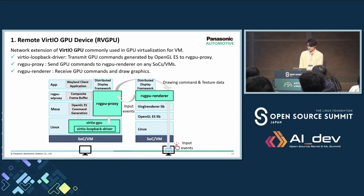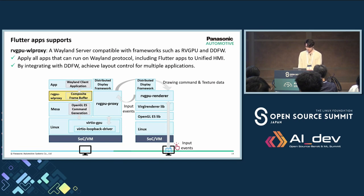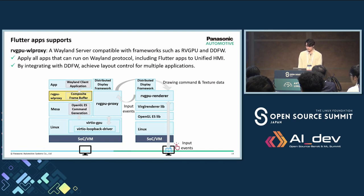RBGPU also creates virtual input devices such as mouse, touch, and keyboard using U-input. So if you touch a remote display, input events can be sent to applications via network, and you can interact with applications. We developed RBGPU Wayland Proxy to enable remote rendering of Flutter applications using RBGPU. RBGPU Wayland Proxy is a Wayland server that can integrate with the unified HMI framework, including both RBGPU and DDFW components. This allows all applications that can run on the Wayland protocol, including AGL Flutter applications, to be used within unified HMI. Additionally, by integration with DDFW, it facilitates easy layout control for multiple applications.